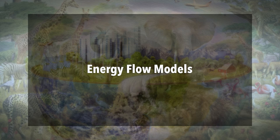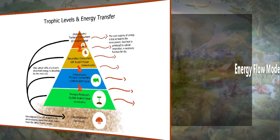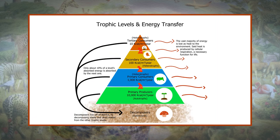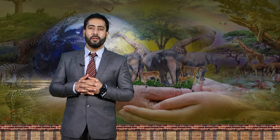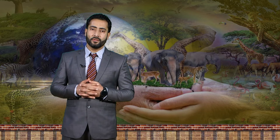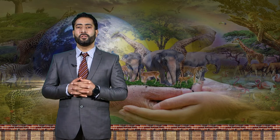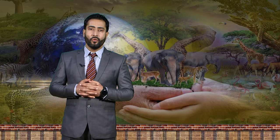Now let us discuss energy flow models. Due to the unidirectional flow of energy, the behavior of energy in an ecosystem is called energy flow. From the energetics point of view, energy flow is explained as: (1) the efficiency of producers in absorption and conversion of solar energy; (2) the use of the converted chemical form of energy by consumers; (3) the total input of energy in the form of food and its efficiency of assimilation; (4) the loss caused through respiration, heat, and excretion; and (5) the gross and net production.